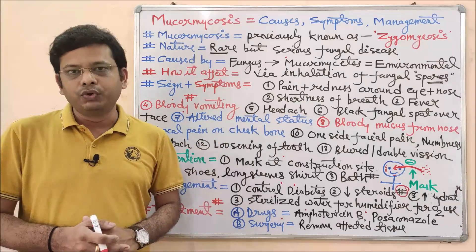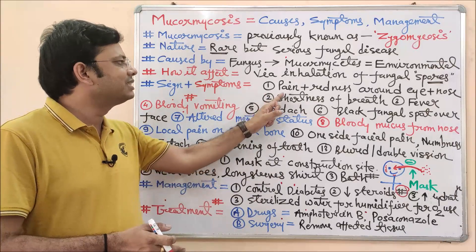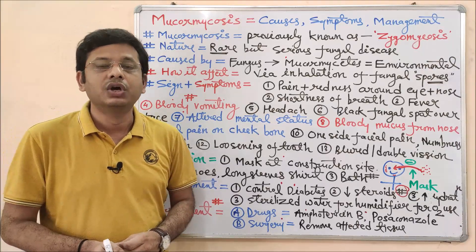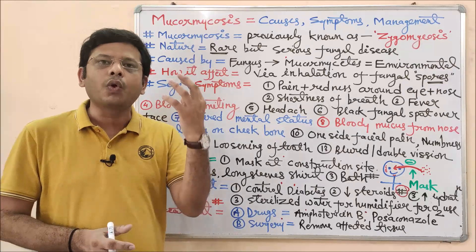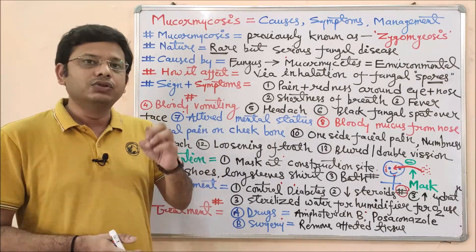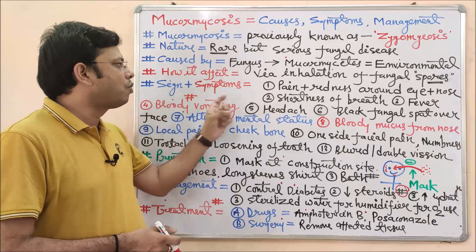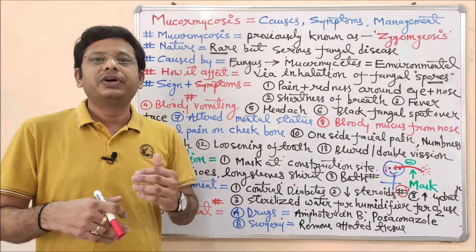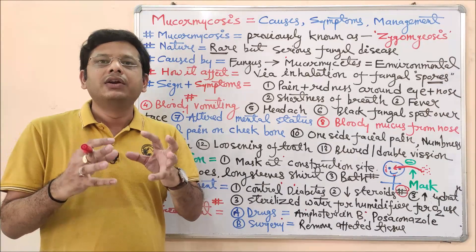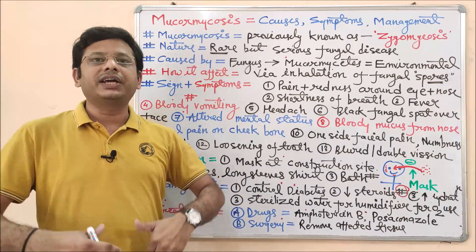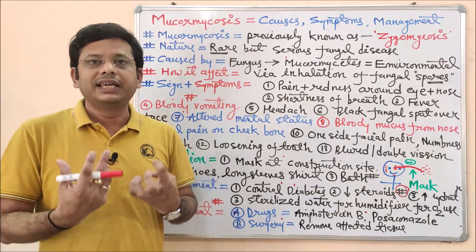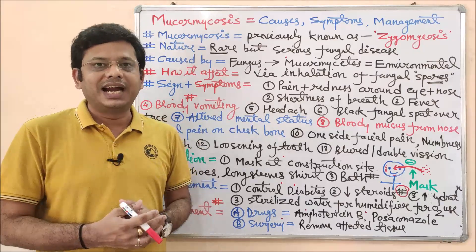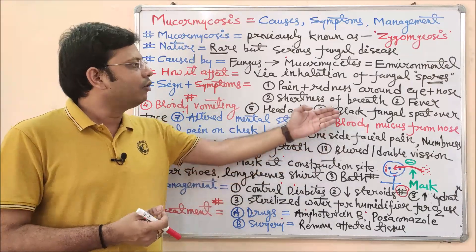The first sign or symptom is pain and redness around the eye and nose. A person with mucormycosis will feel pain around the face, around the eyesight, and around the nose area. The second symptom is shortness of breath — the person will have difficulty breathing, feeling heaviness inside the chest during respiration, compared to a normal individual.